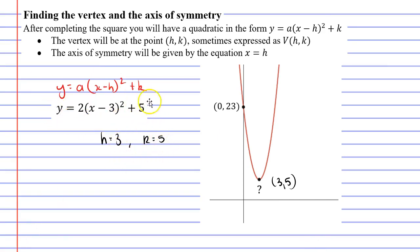Whenever a quadratic function is in this form the vertex will always be h comma k, or in the case of this function it's going to be (3, 5). Now there's actually a couple of different ways you can write the vertex down. I could write it as (3, 5), or I could write it as V(3, 5). Sometimes we put the V out the front of the brackets just to point out that this specific point is the vertex.